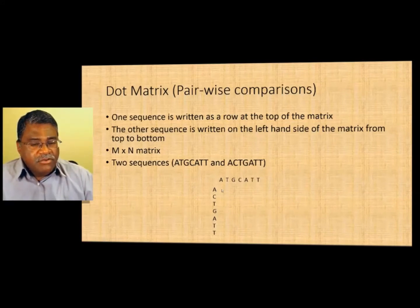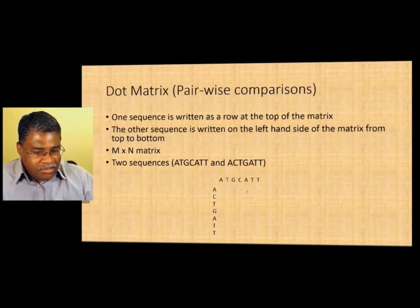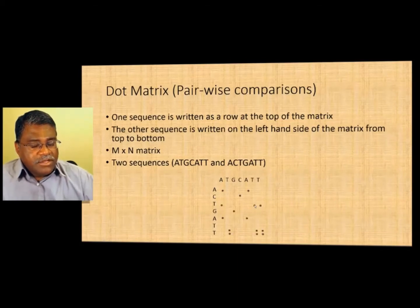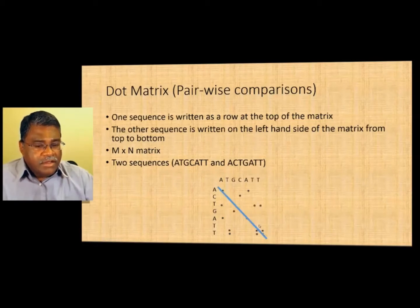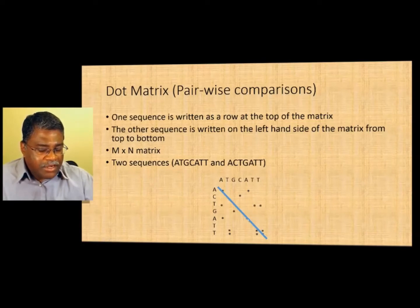You put a dot wherever you find a similarity. So A and A gets a dot, C gets a dot at its matching position, and T gets dots at matching positions. If two sequences were exactly identical, A would match with A, C with C, T with T, and so on. The nature of the diagonal — how populated it is — tells you how much the sequences are matching. In this case you can see they're not matching well.